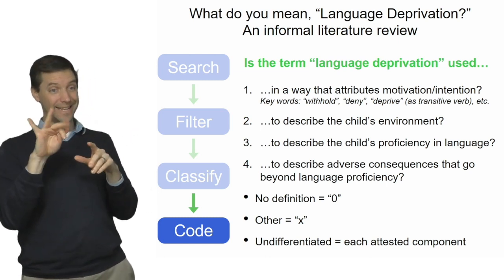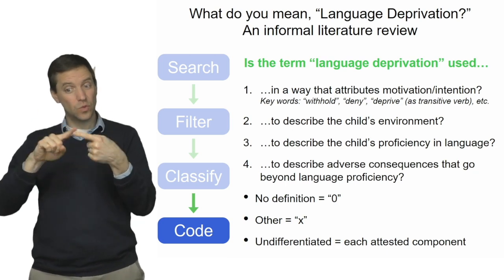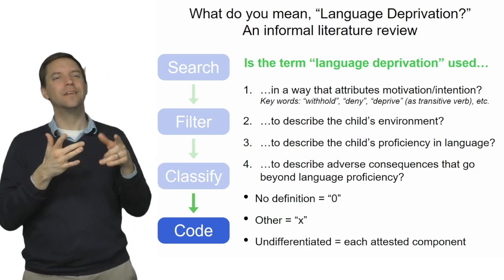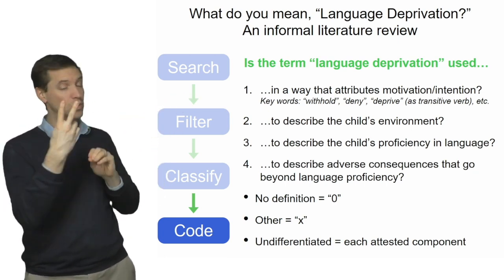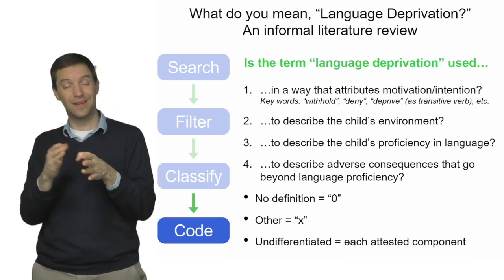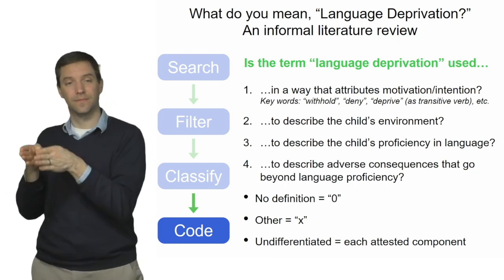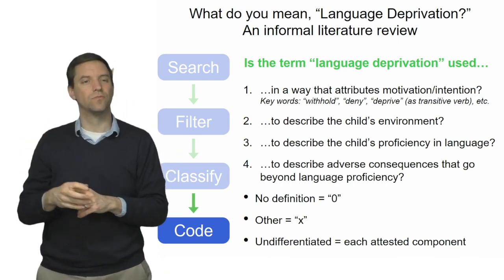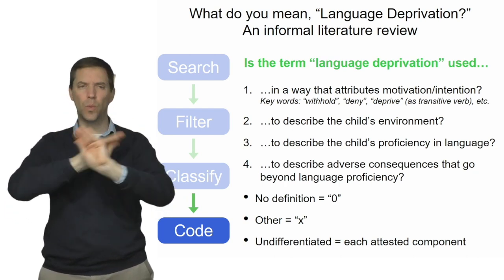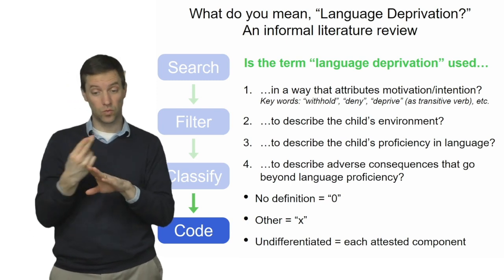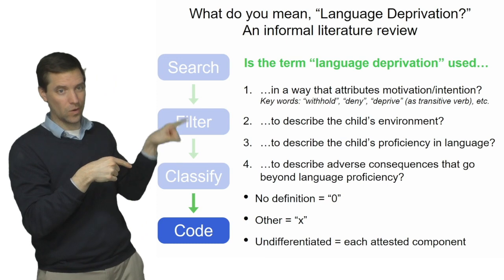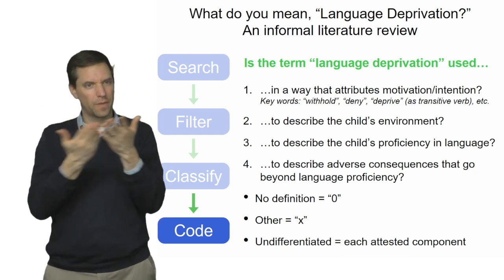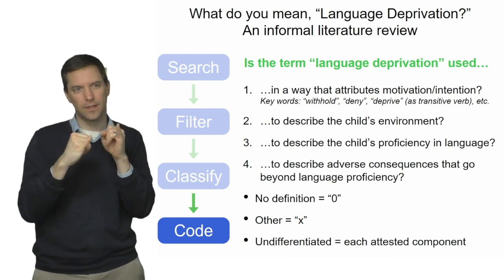We then coded those results. If the article used language deprivation to refer to intentionality — any withholding, denying, or depriving on purpose — we checked yes for category one. If it described the child's environment, yes for category two. If it described the child's language proficiency, yes for category three. If it talked about long-term impact in areas not specifically about language, yes for category four. If they used the term with no clue as to its meaning, we called that a zero. If they used it to mean something not on our list, we gave that an X. And if a use included multiple senses, we rated each independently.